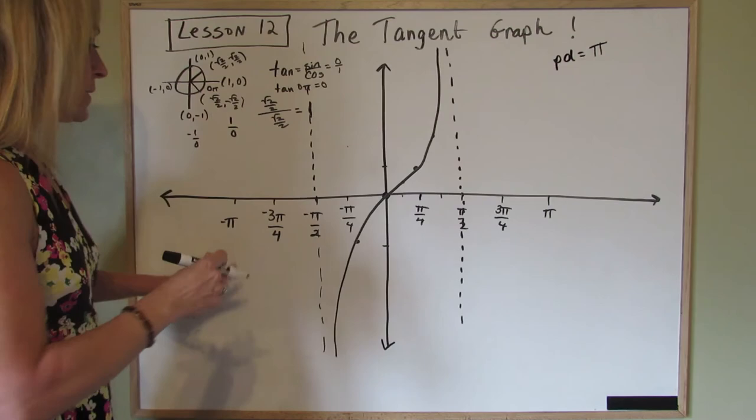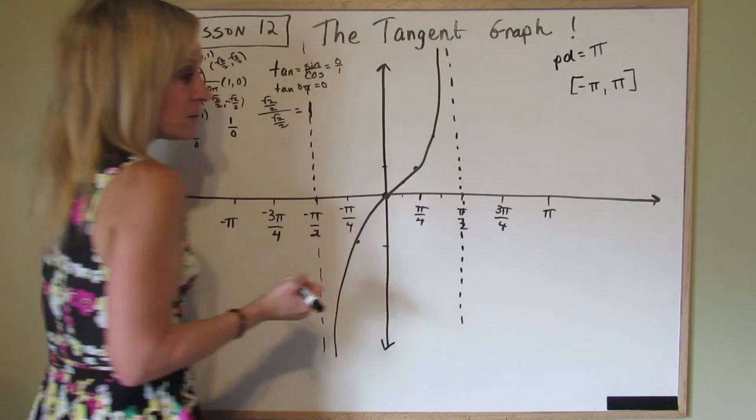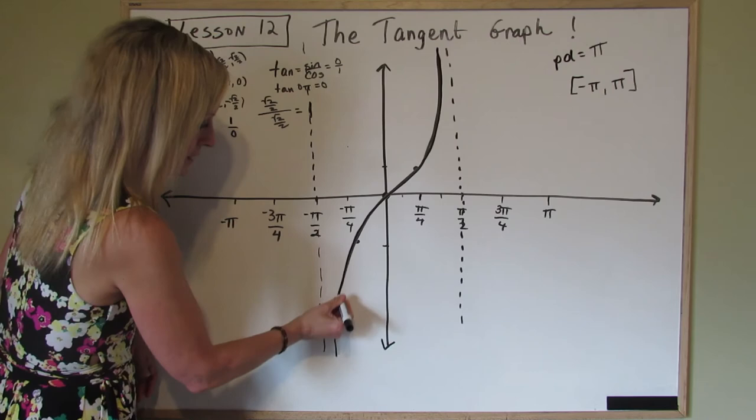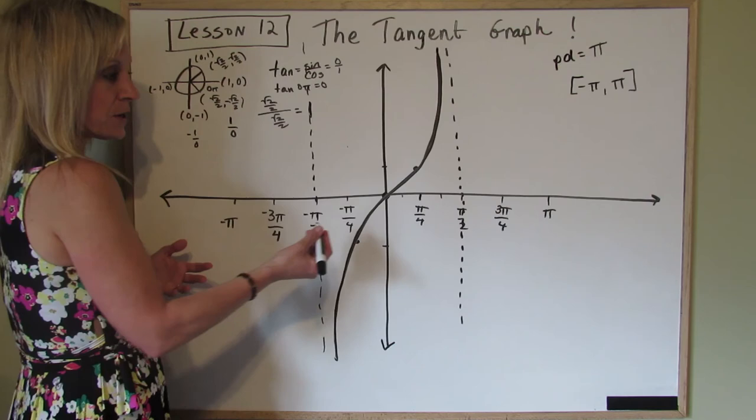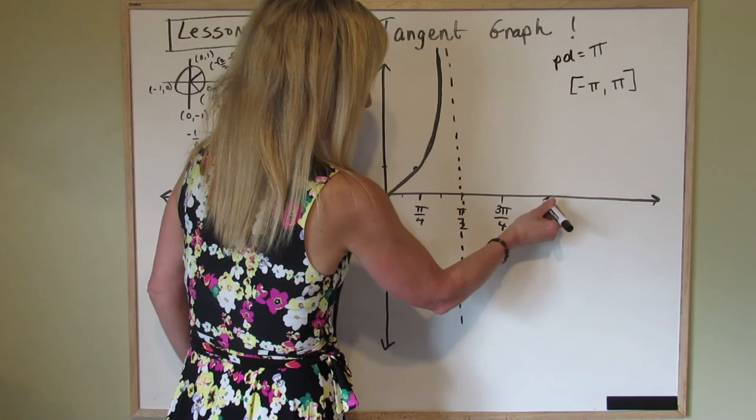So I'm graphing this on the interval negative pi to positive pi. So therefore, I have to add in just a little bit. Since the tangent does this every pi, a half of this needs to go right here. And then this half goes this way. And that's your tangent graph. Thanks for watching. Have a great day.